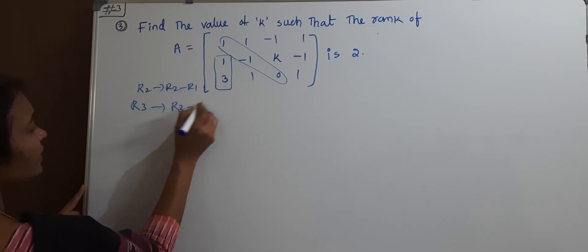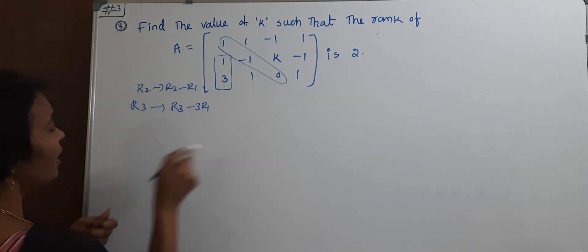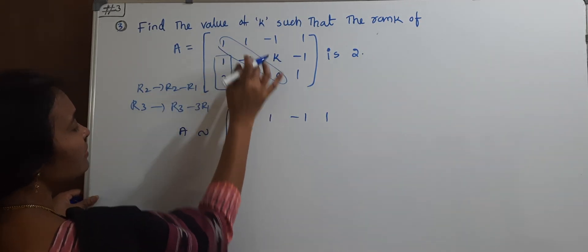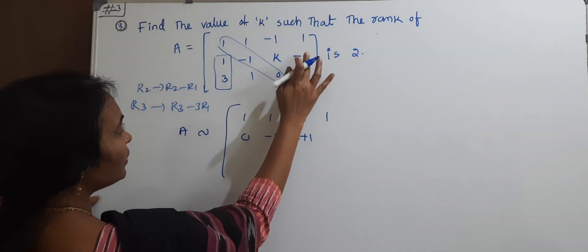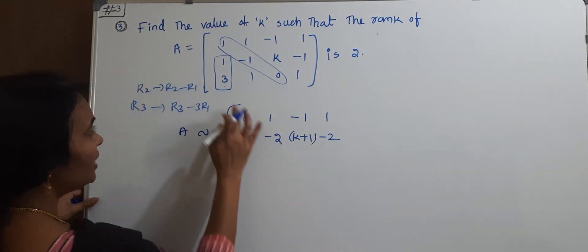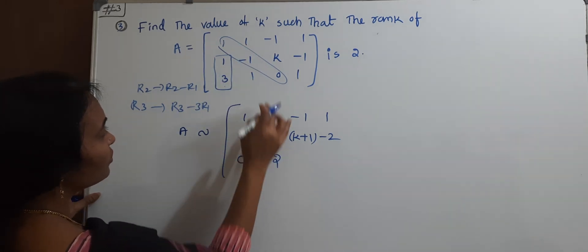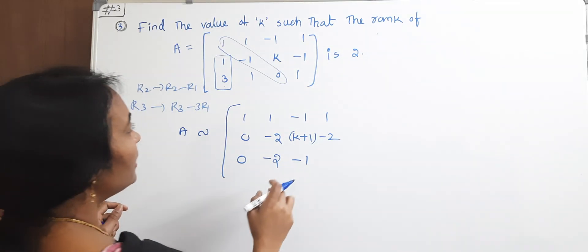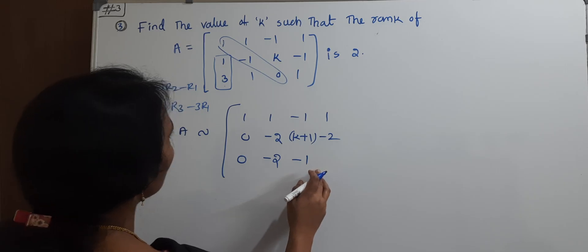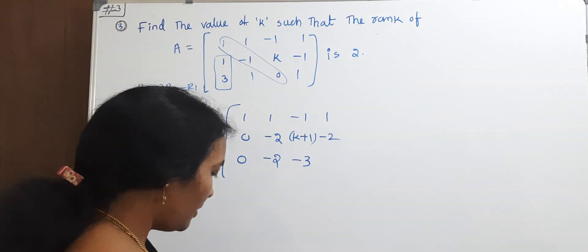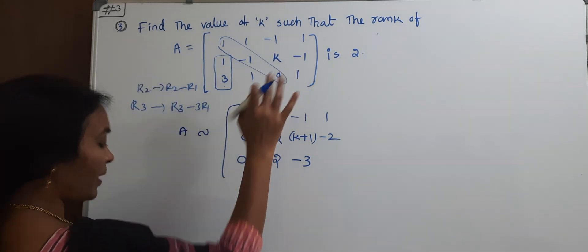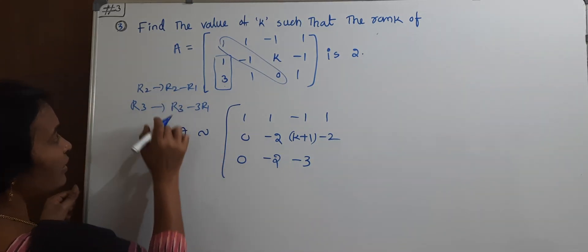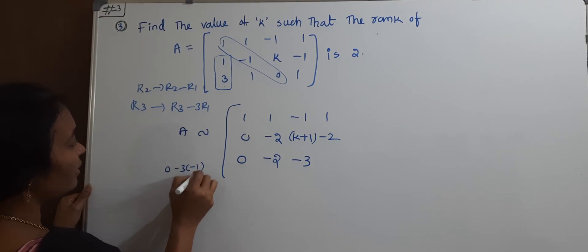Applying R2 → R2 minus R1: 0, -1, -1, -2. And for R3 → R3 minus 3R1: 0, 1 minus 3 = -2, -1 minus... working out to give entries including k plus 1 and -2. Simplifying: below the principal diagonal all entries should be 0. We continue: R3 → R3 minus R2 to eliminate the remaining non-zero entry below the diagonal.